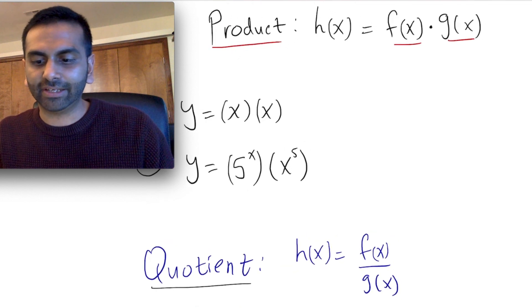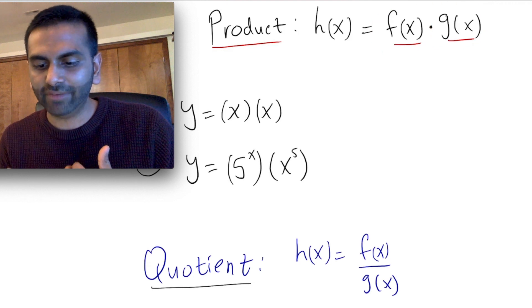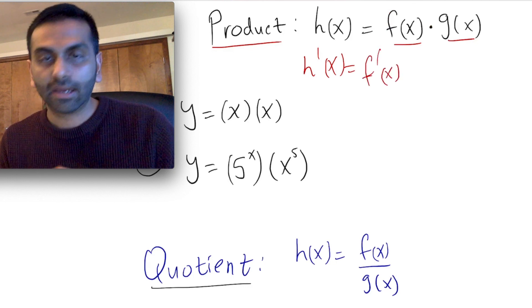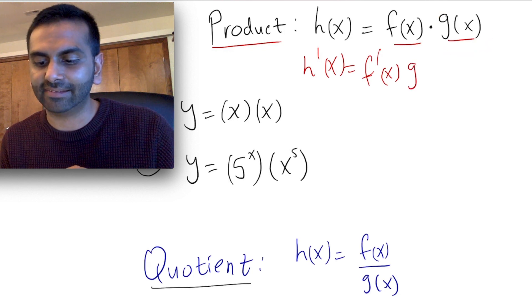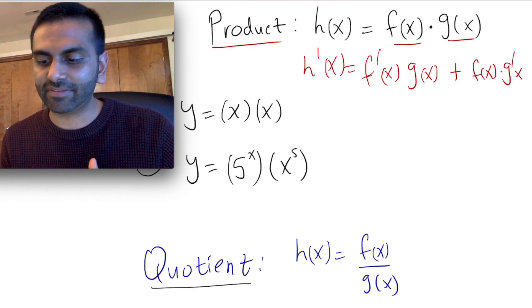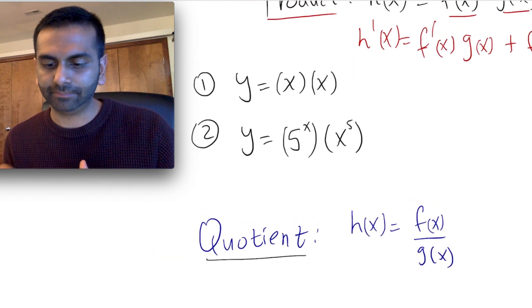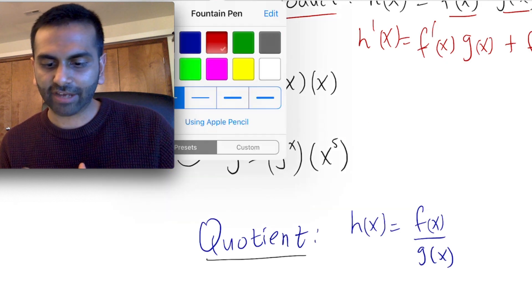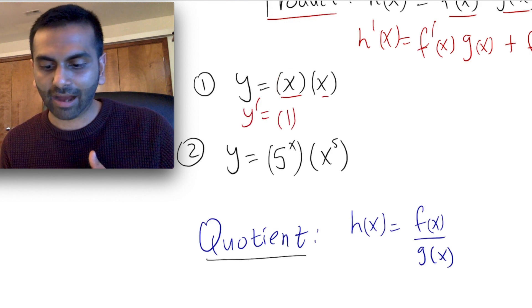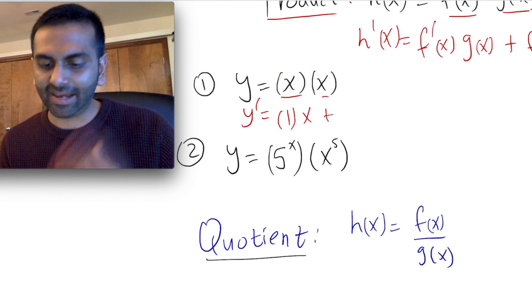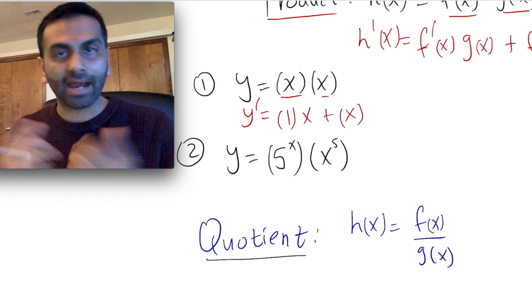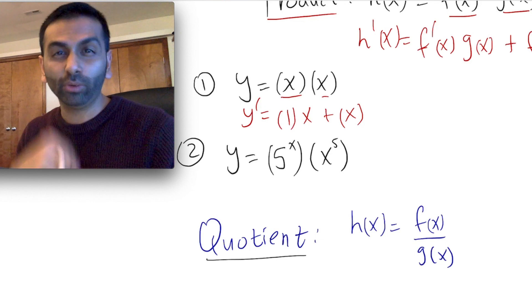Anytime you have a function that's really two functions multiplied to each other, the derivative is going to be the derivative of the first guy, f prime of x, times the second guy as is, and then plus, now the other way around — the first guy as is, and then take the derivative of the second guy. The order doesn't really matter for the product rule, but it will for the quotient rule in a moment.